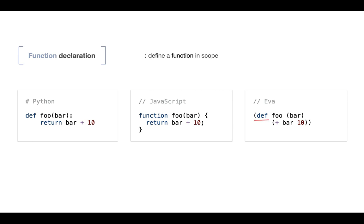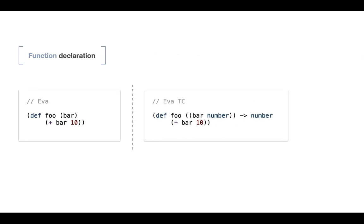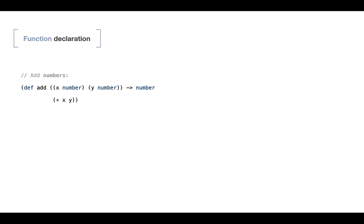Another example is function declaration. We use the 'def' keyword from Python, and in the untyped version the expression has no type information. In our class we'll have to provide type information: each parameter becomes a pair consisting of the parameter name and its type, and we also provide the return type. We're also going to support type declarations, aliases, and generic programming.